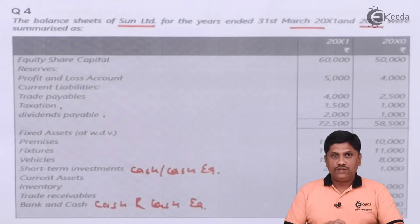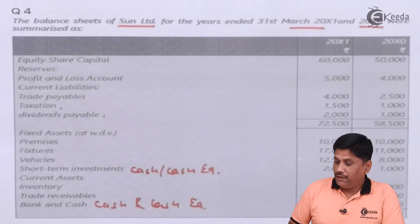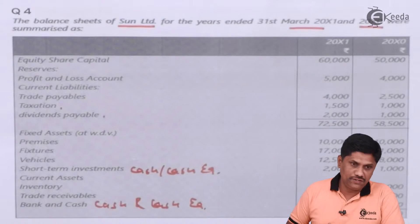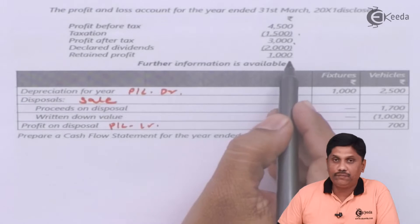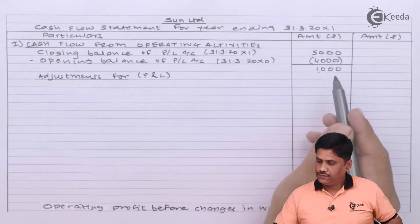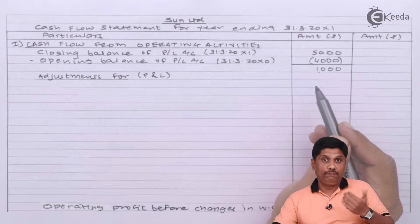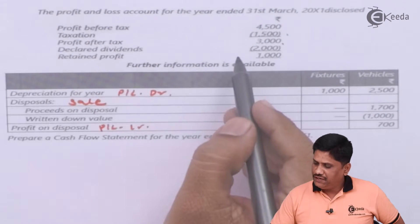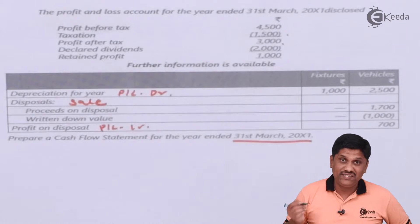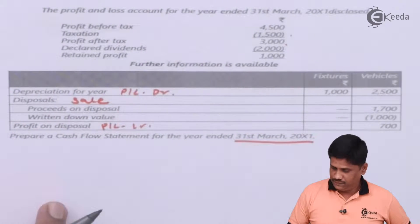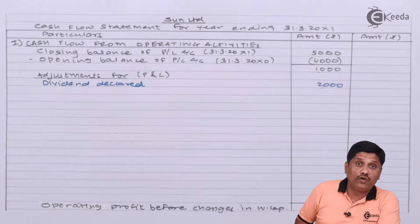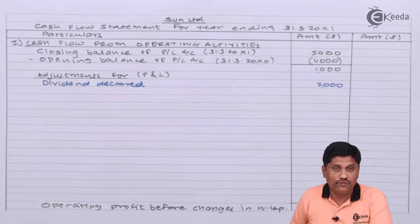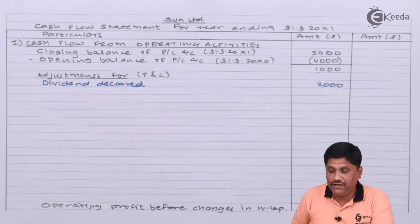I always suggest beginning with additional information rather than the balance sheet. The retained profit is 1,000, which is the net profit added to the P&L account. They have also declared a dividend of Rs. 2,000, which is a non-operating item debited to the P&L account — so I will add it back. The actual dividend paid will come in financing activity, for which I need to prepare a dividend payable account.